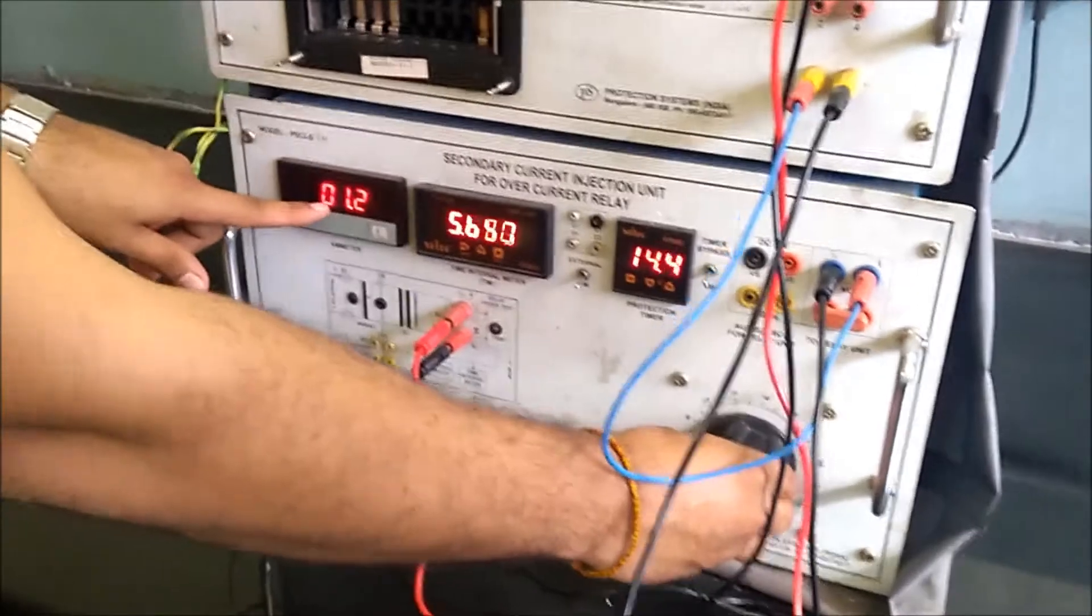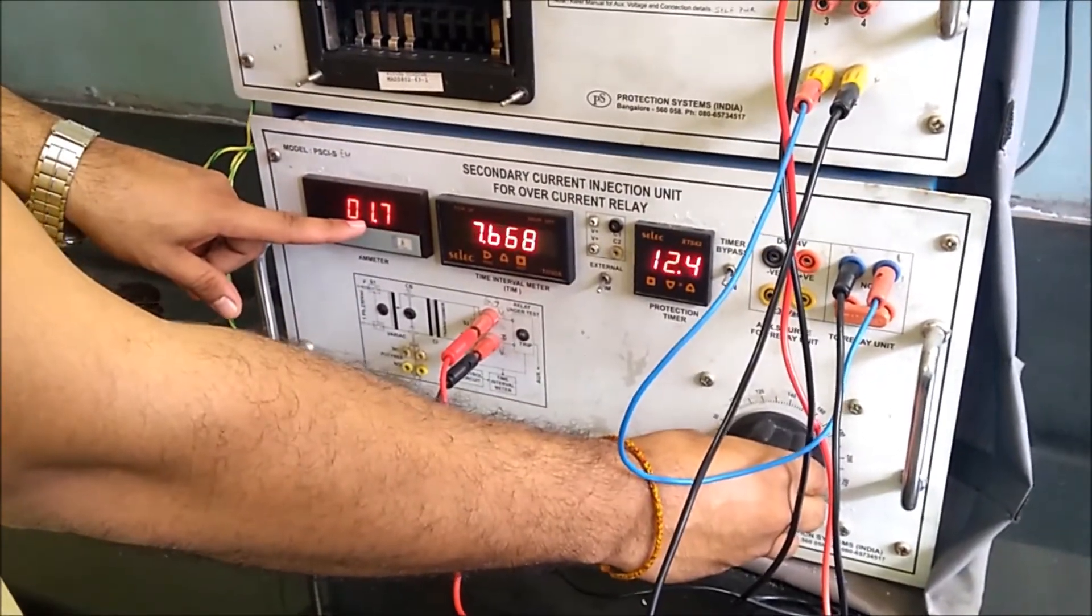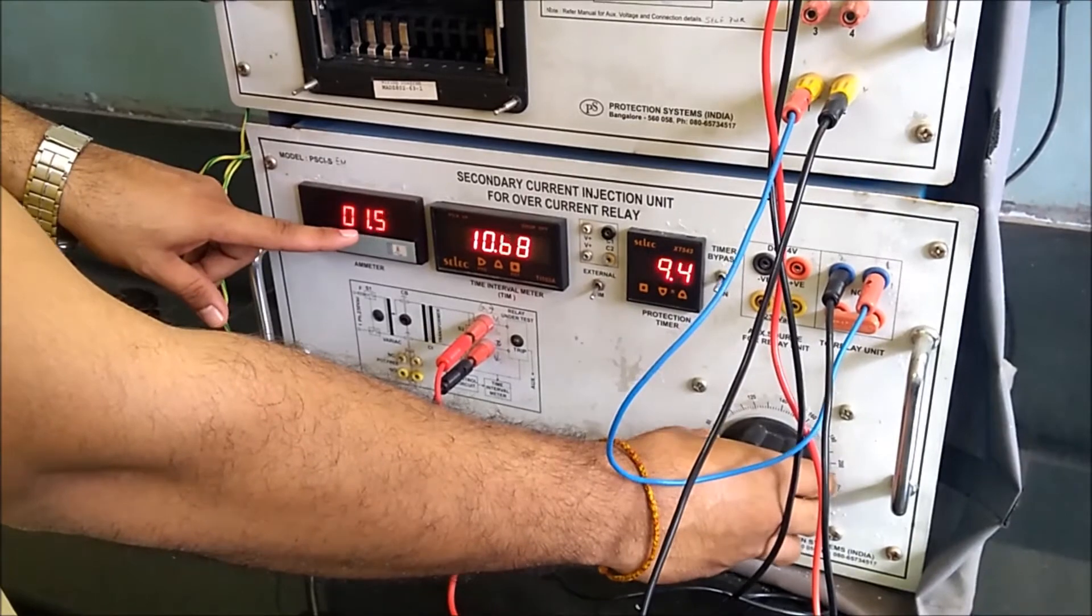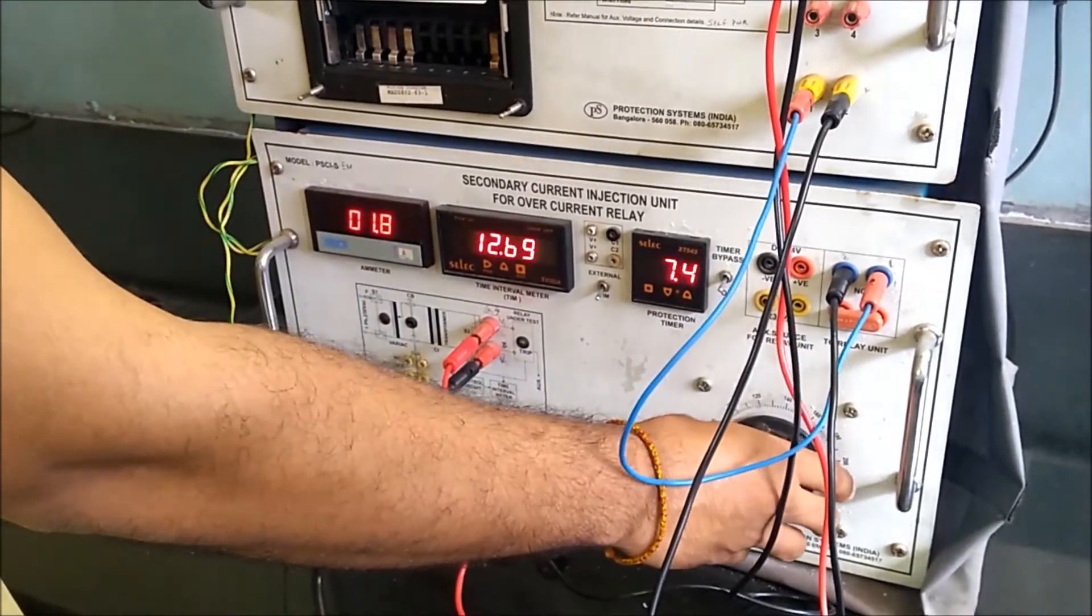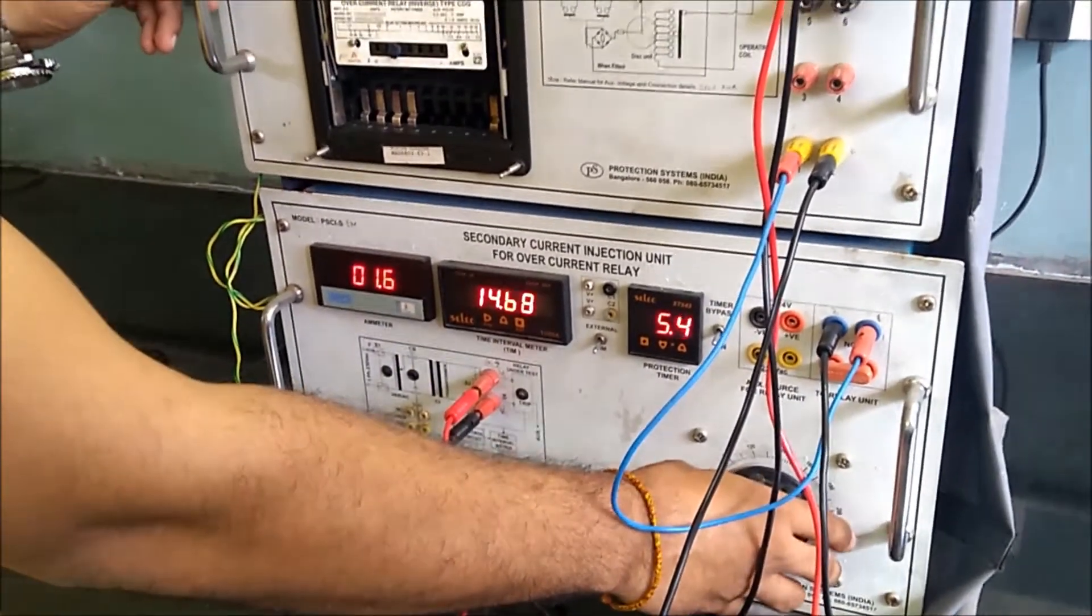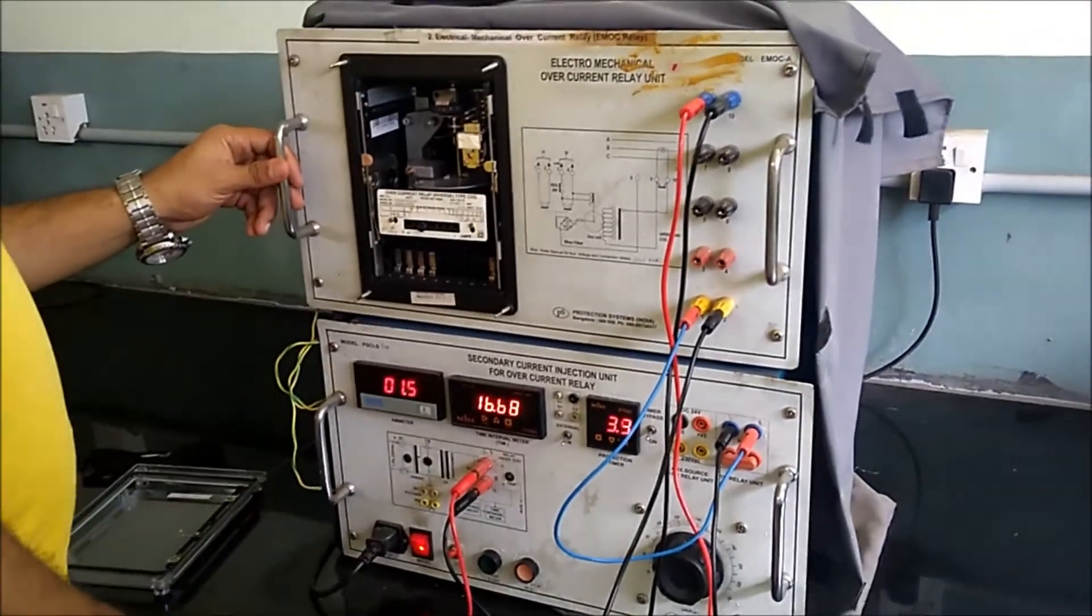Now we are setting it to 1.5 amps approximately because 1 amp is our set current. Any current above 1 amp is treated as fault. We are setting it 1.5 amps to see whether the relay will trip or not.